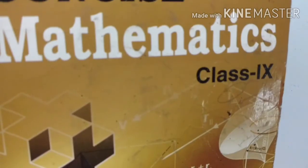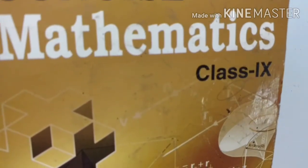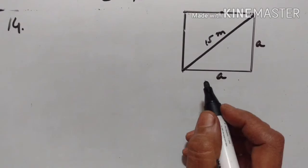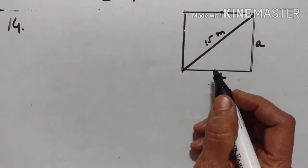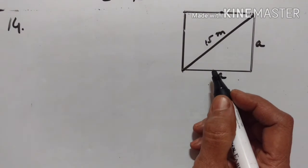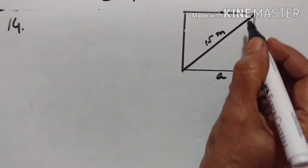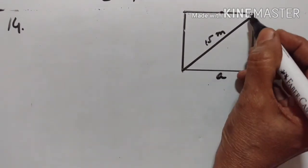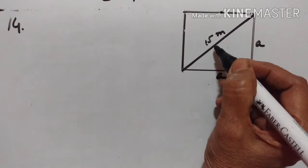Hello students, welcome back. Area and Perimeter, Concise Mathematics Science class. Find the area and perimeter of a square plot of land, the length of whose diagonal is 15 meters.